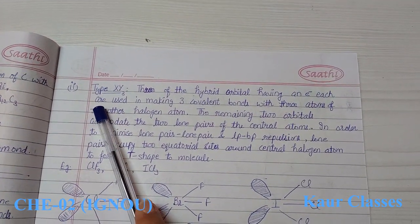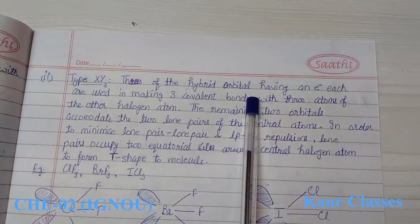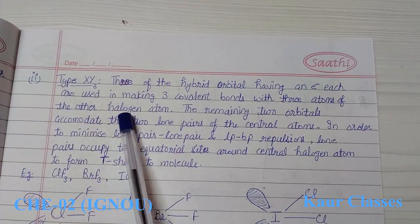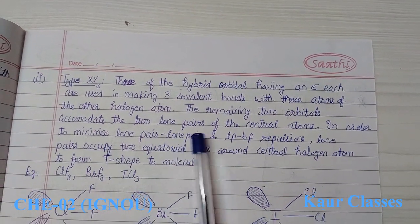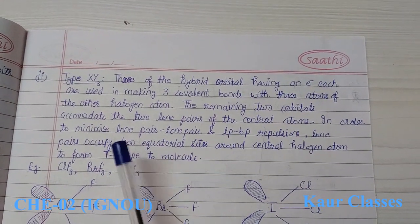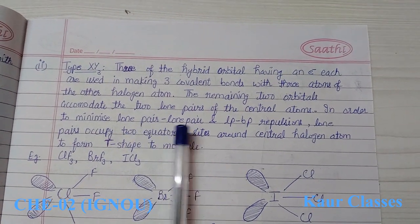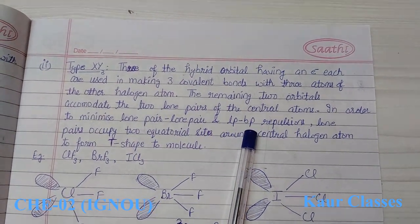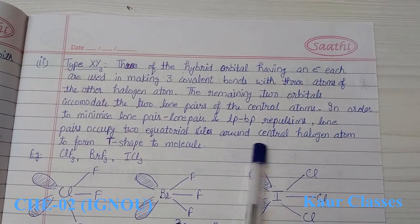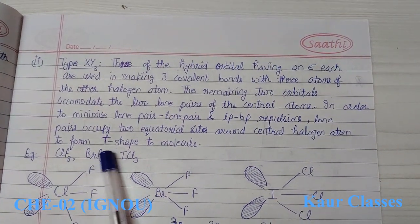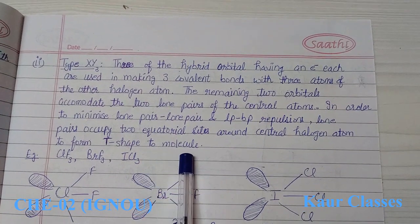The second type is XY3. Three sp3d hybrid orbitals each having one electron are used in making three covalent bonds with three atoms of the other halogen. The remaining two orbitals form two lone pairs on the central atom. To minimize lone pair–lone pair and lone pair–bond pair repulsion, two equatorial sites are occupied by lone pairs, giving a T-shaped molecule.